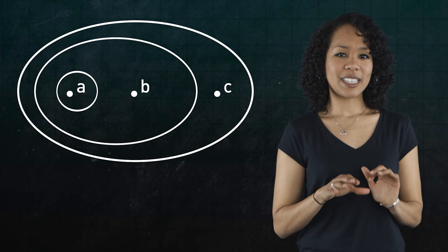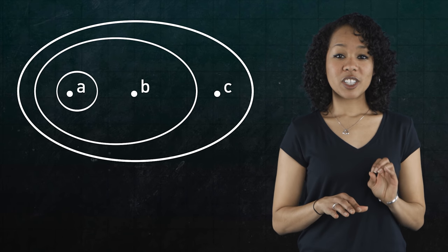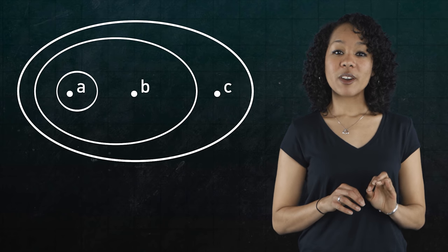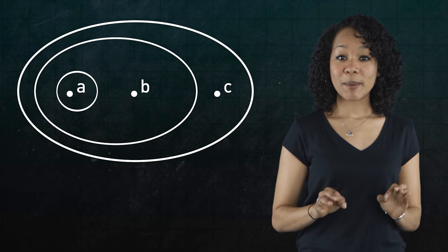I'll close by leaving you with one example of a topological space, which we can verify using the three axioms. Ready? Here it is. How is this a topological space? For the solution, check out the link to Mathema in the description below. There, you'll also find this week's challenge problem.